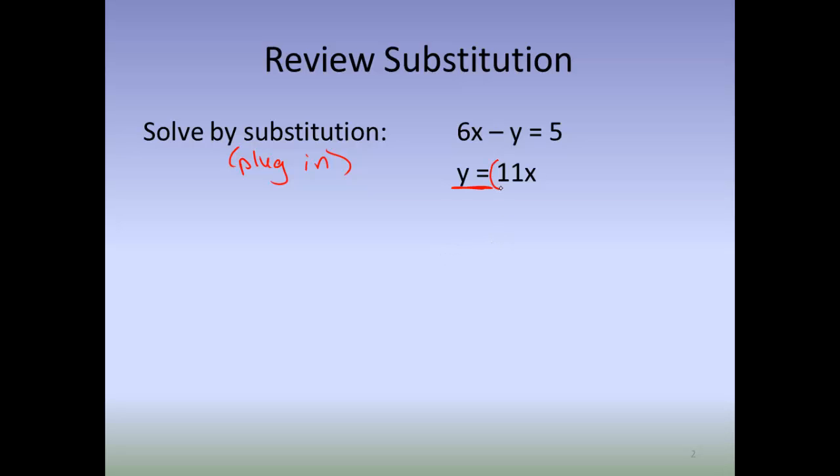that tells me I'm going to plug in 11x where this y used to be. So I start recopying the top equation and it says 6x minus, and instead of the y, I'm going to write 11x, and then it equals 5. At this point, you have a linear equation. So I can combine my terms and get negative 5x equals 5, and I get x equals negative 1.